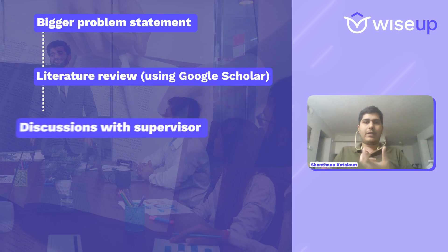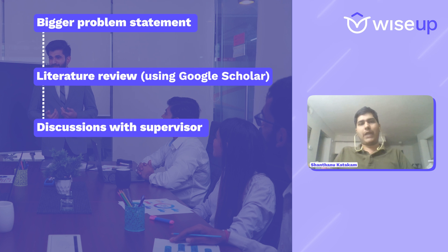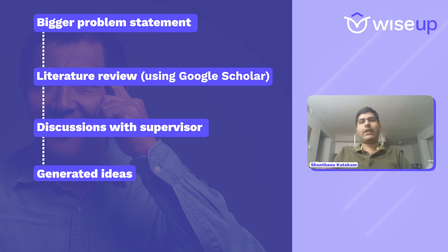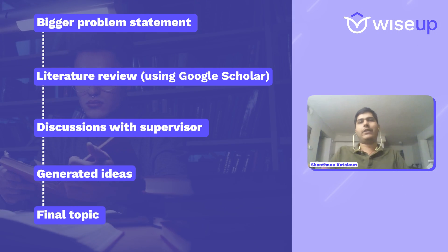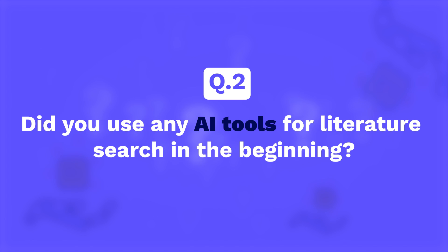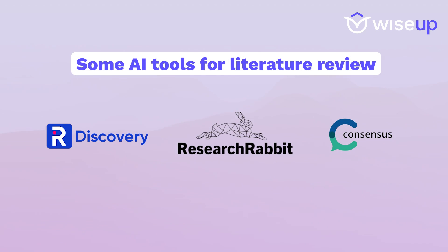Upon discussions with my supervisor, based on the literature review, I could generate a few ideas to work on, which eventually led to my first paper. And what about the literature review — did you use any AI tools for your literature search in the beginning? I wish I could have used AI tools in the literature review; that could have really decreased my efforts. But yes, that is something I'm planning to do for the next problem statement I'm working on.